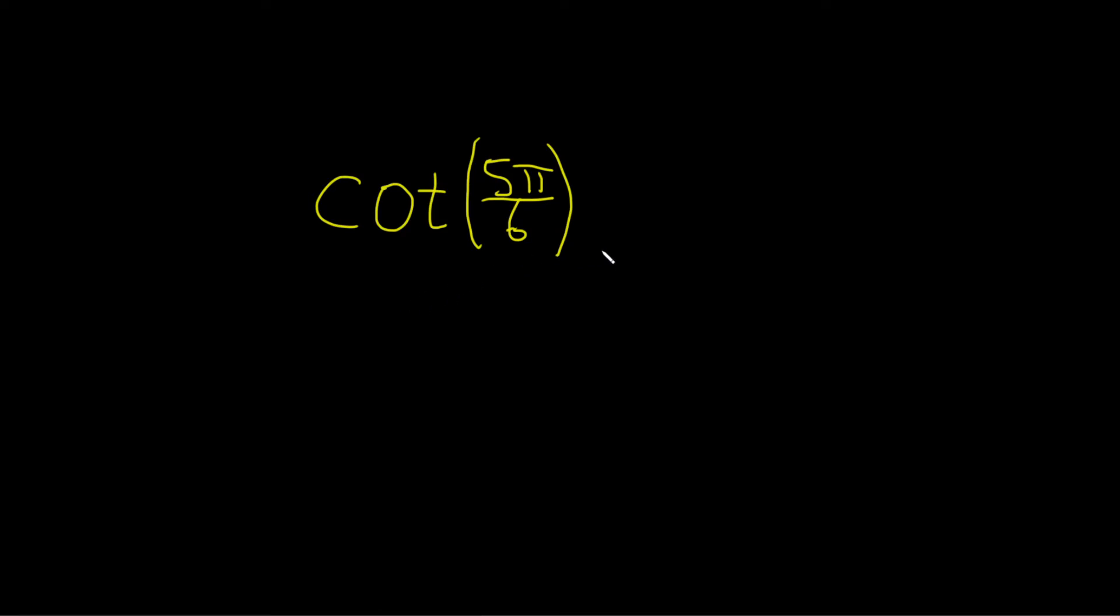In this problem, we're going to find the cotangent of 5π over 6. The way we'll do it is by writing cotangent in terms of sine and cosine. So cotangent of 5π over 6 is the cosine of 5π over 6 divided by the sine of 5π over 6. It's cosine over sine.